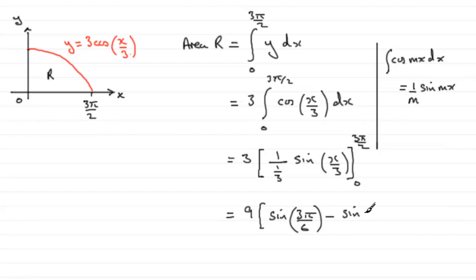Now the sine of π/2, which is essentially what this is, the equivalent of sine of 90 degrees if you like, is going to be 1. And the sine of 0 is 0, so this comes to 1. 9 times 1 is 9, so there's your exact answer for the area of R.